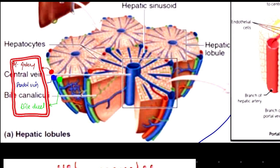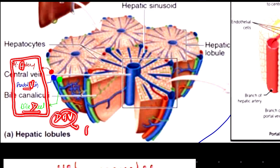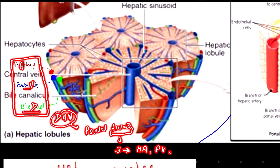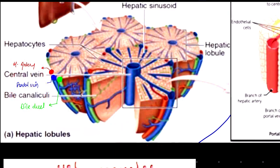The three structures — hepatic artery, portal vein, and bile duct — are labeled as D, A, and V structures. All three together are called the portal triad. 'Triad' means three, referring to these three structures.